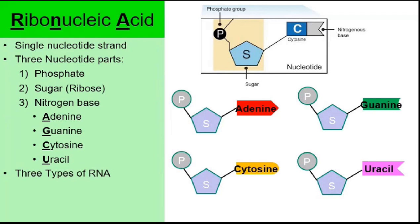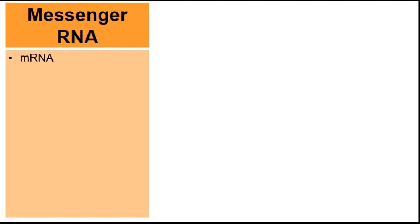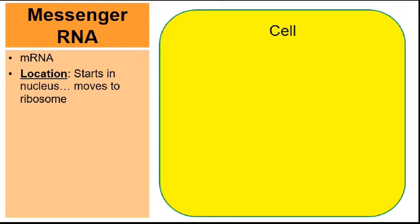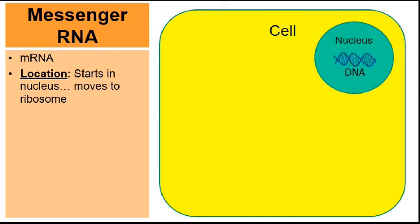RNA is still a nucleic acid, so it's still made from building blocks called nucleotides. And nucleotides have three parts: one being a phosphate, a second being a sugar molecule. The sugar of RNA is called ribose. The sugar of DNA is called deoxyribose. They're virtually identical — highlighted in red is the difference. Deoxyribose has been deoxygenated; it's missing an oxygen atom. Other than that, they're very similar to one another.